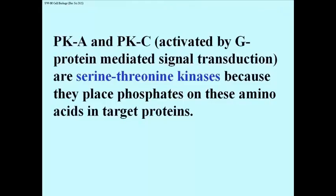Most amino acids, or amino acid side chains, can't be phosphorylated. PKA and PKC are both called serine-threonine kinases, which means that they catalyze the transfer of phosphate groups from an ATP to an appropriate serine or threonine side chain in the target proteins.